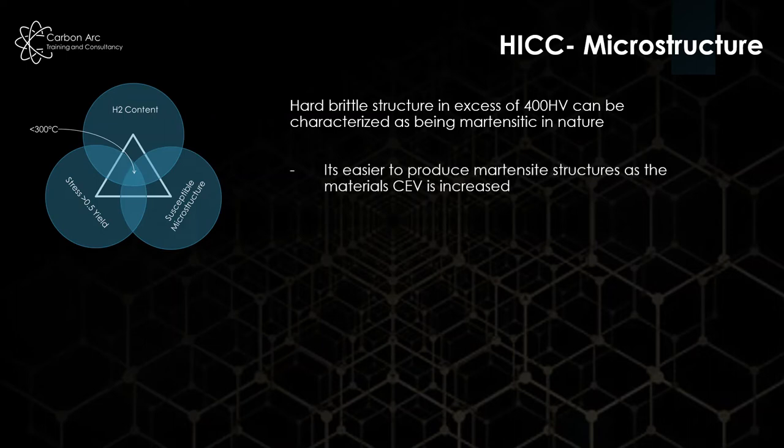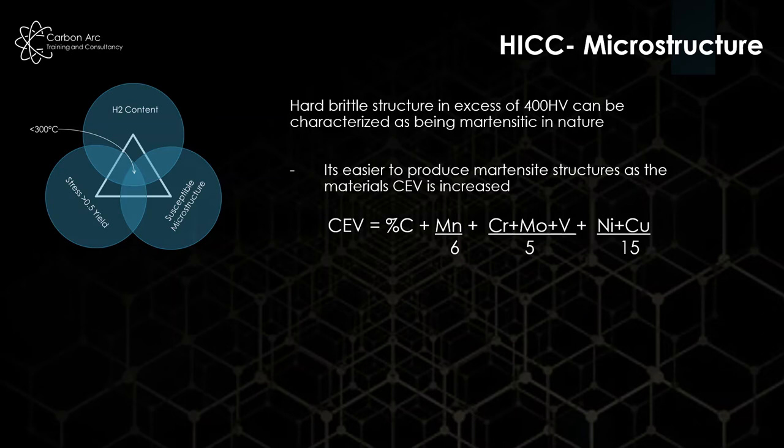Martensite is easy to produce in steels, or easier to produce in steels, as we increase the carbon equivalent value. Our carbon equivalent value is this equation: CEV = %C + Mn/6 + (Cr+Mo+V)/5 + (Ni+Cu)/15. You wouldn't need to know this equation off by heart for, say, a CSWIP examination, but you need to know about carbon equivalent value.